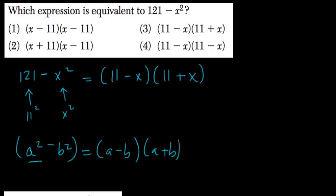That just means a squared, we'll take the square root of that, that's your first term. So we had 121, square root is 11. Second term is b squared, take the square root of that. Our b squared term is x squared, so b is just x.